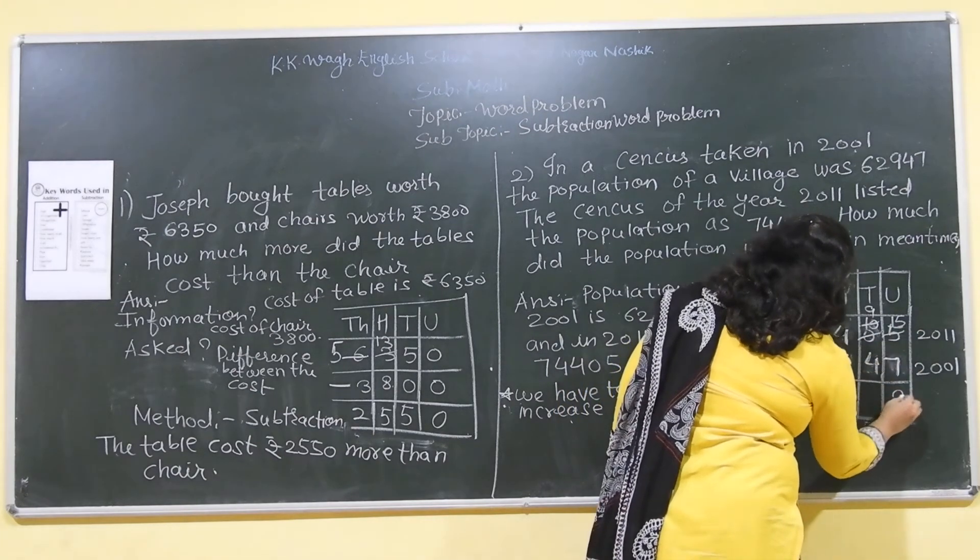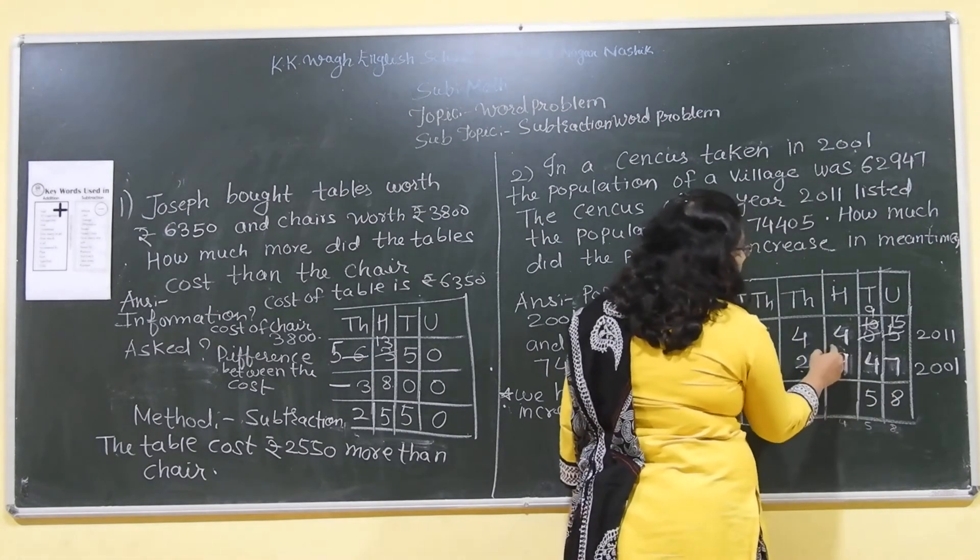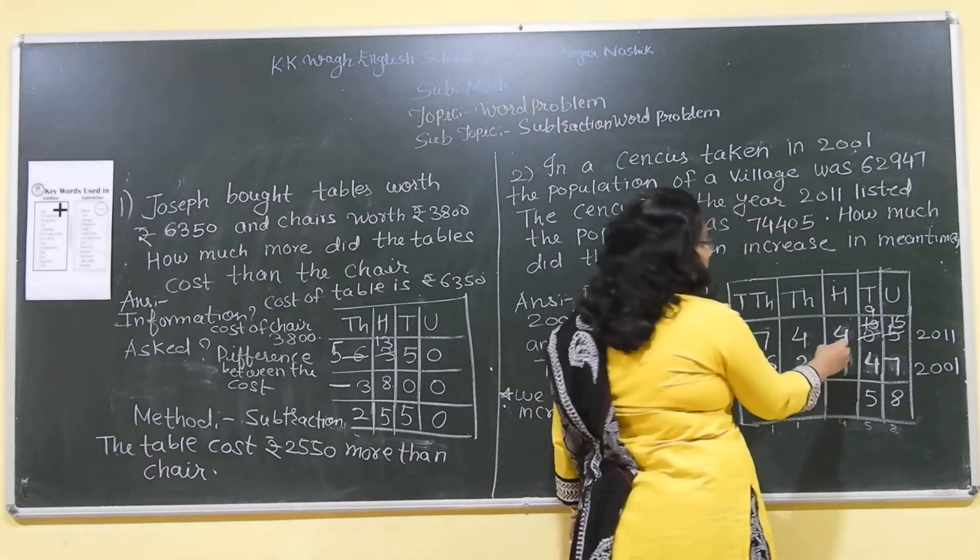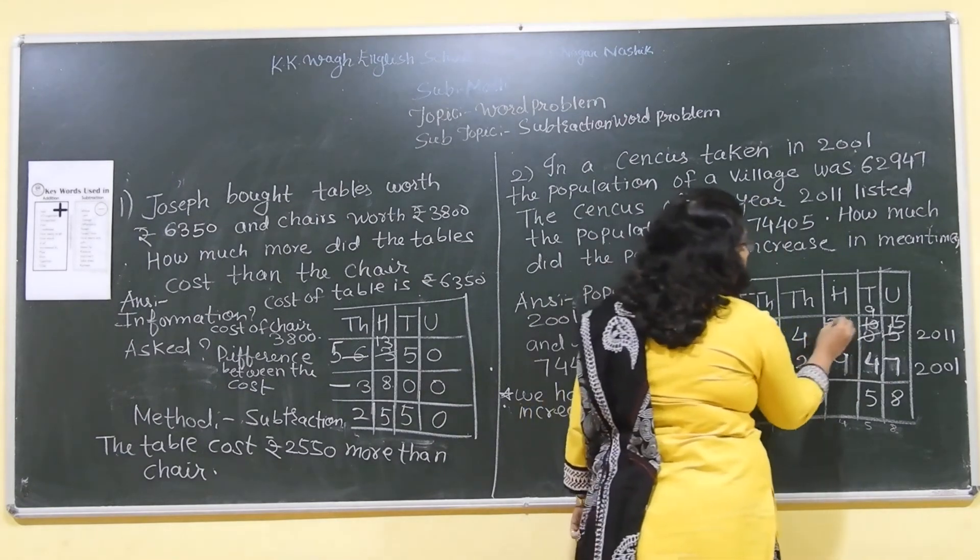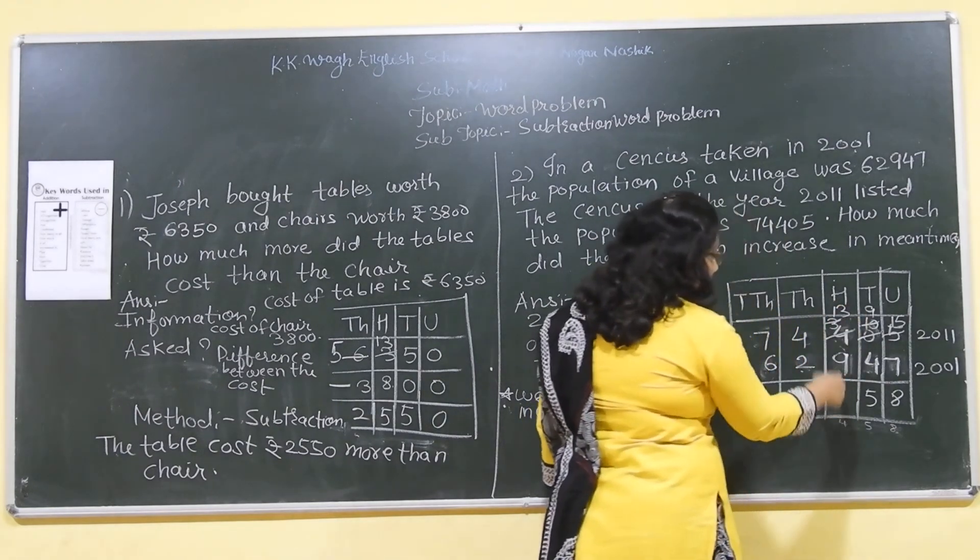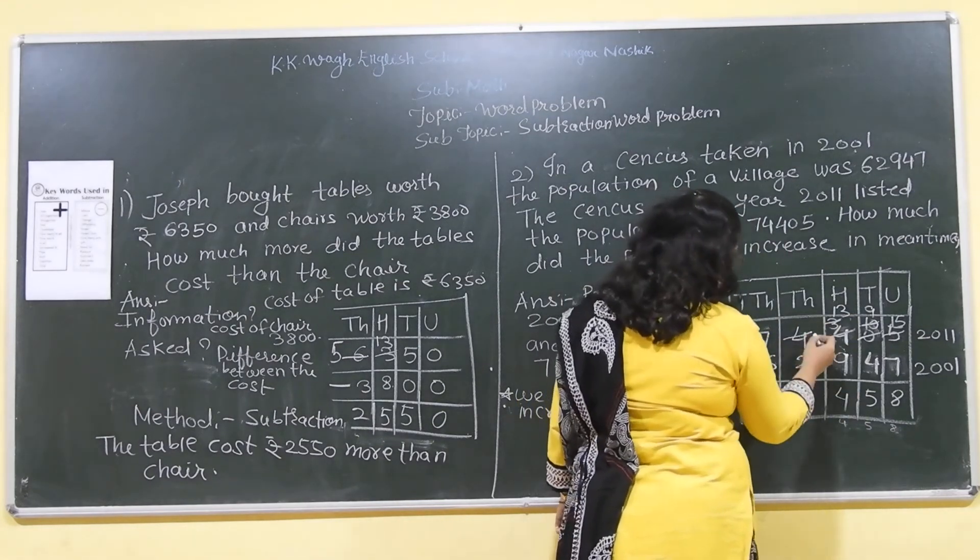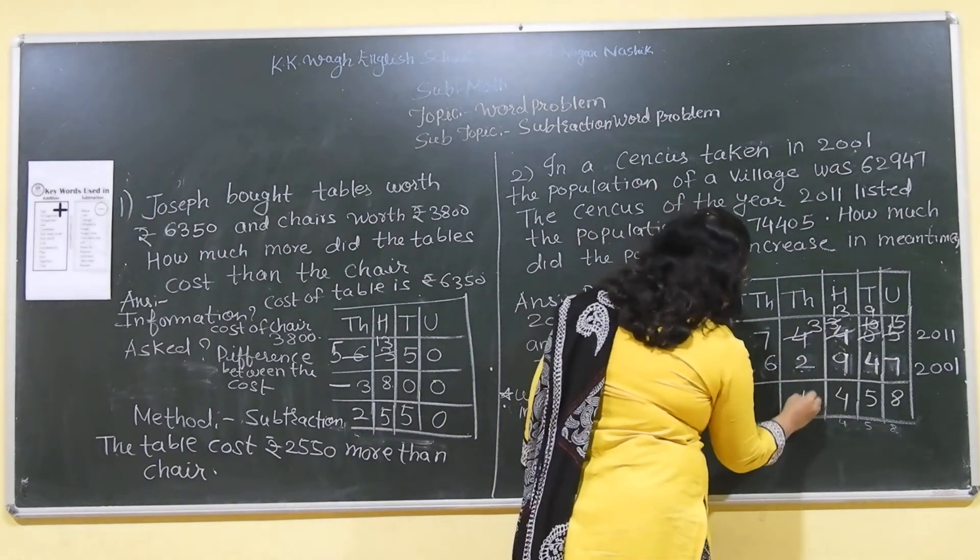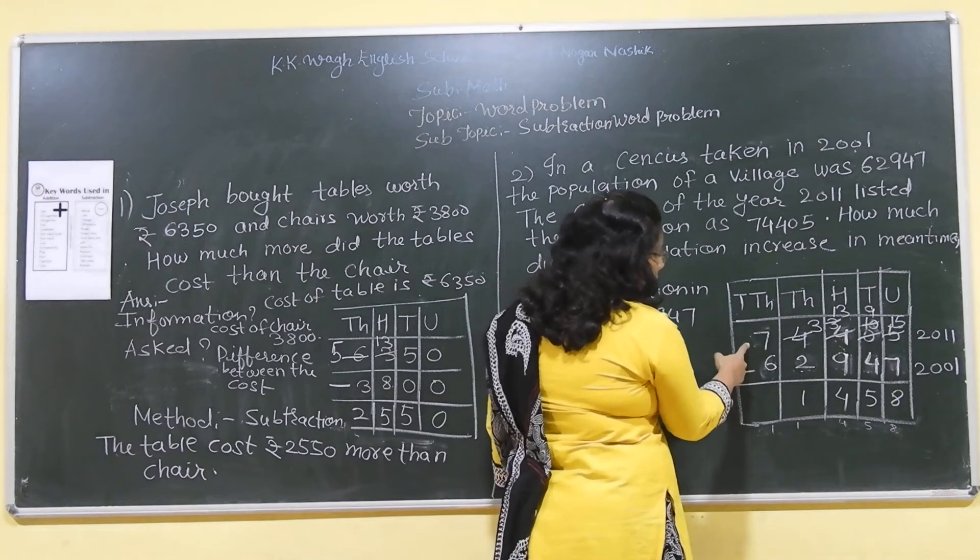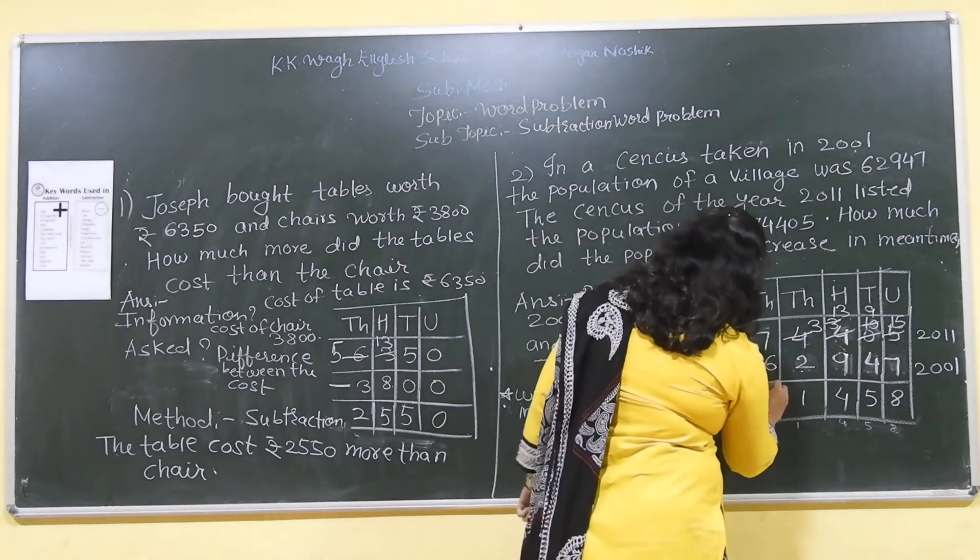Then 15 minus 7 is equal to 8, 9 minus 4 is equal to 5. Again, here we have borrowed 1 from this side, so we will make it 3. Again, we can't subtract 9 from 3, so we will make it here 13. 13 minus 9 is equal to 4. Again, we have borrowed 1 from here, so we will make it 3 here. 3 minus 2 is equal to 1 and 7 minus 6 is equal to 1.